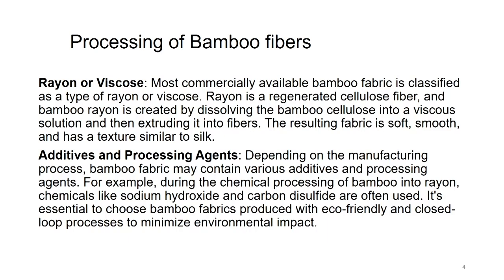Processing of bamboo fibers — Rayon or viscose: Most commercially available bamboo fabric is classified as a type of rayon or viscose. Rayon is a regenerated cellulosic fiber, and bamboo rayon is created by dissolving bamboo cellulose into a viscous solution and then extruding it into fibers. The resulting fabric is soft, smooth and has a texture similar to silk, as fine as silk once the bamboo cellulose is converted into the viscous solution and extruded as fibers.